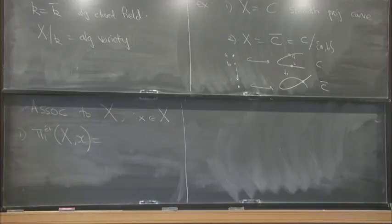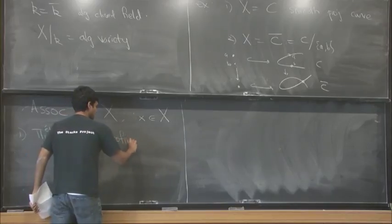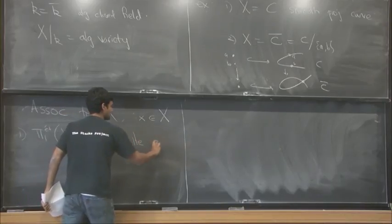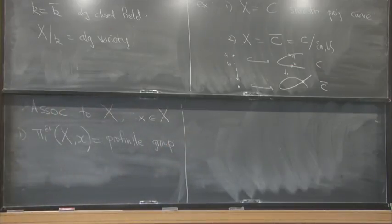And so associated to this data, the theory of the étale topology gives you a fundamental group which is a profinite group. So it's an inverse limit of finite groups. And if you want to describe a profinite group, all you need to do is specify what the finite sets are which are equipped with an action of this group.